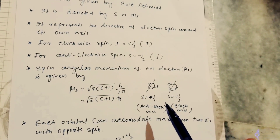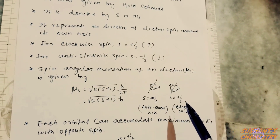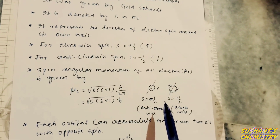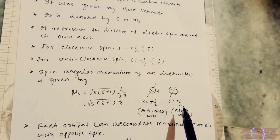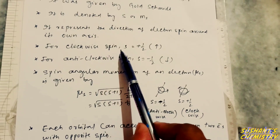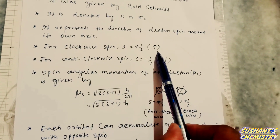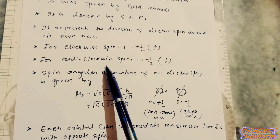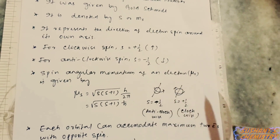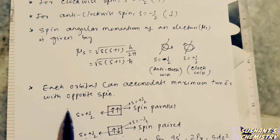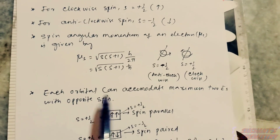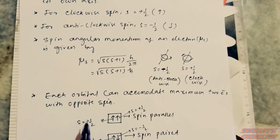The electron can revolve around its own axis in a clockwise direction (s equals plus half, represented by an upward arrow) or in an anti-clockwise direction (s equals minus half, represented by a downward arrow). Each orbital can accommodate a maximum of two electrons with opposite spins.